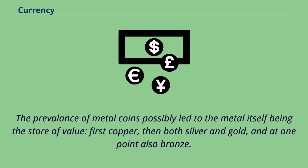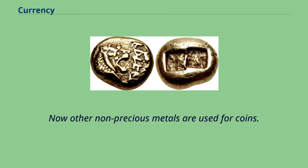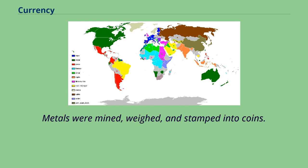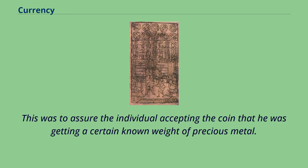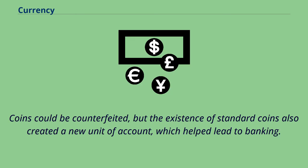The prevalence of metal coins possibly led to the metal itself being the store of value — first copper, then both silver and gold, and at one point also bronze. Now other non-precious metals are used for coins. Metals were mined, weighed, and stamped into coins to assure the individual accepting the coin that he was getting a certain known weight of precious metal. Coins could be counterfeited, but the existence of standard coins also created a new unit of account, which helped lead to banking.